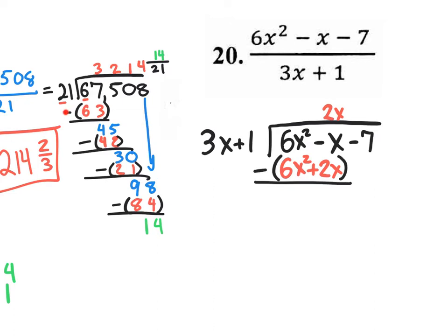That minus sign needs to be distributed to both terms: it's really a negative x minus 2x, giving you a negative 3x. Then this positive 6x squared with a distributed negative becomes negative 6x squared, which completely cancels out. We've done that so far. Next, we bring down the next term, which in this case happens to be a negative 7. Bring that down — so that'll be a minus 7 right there.